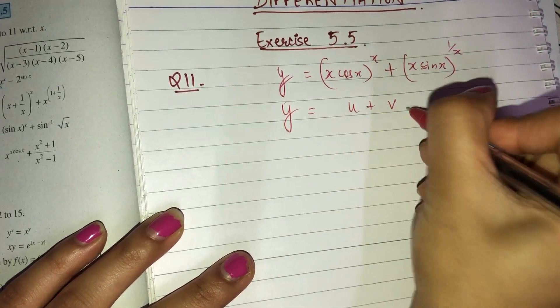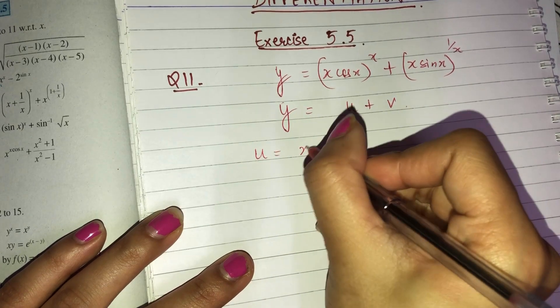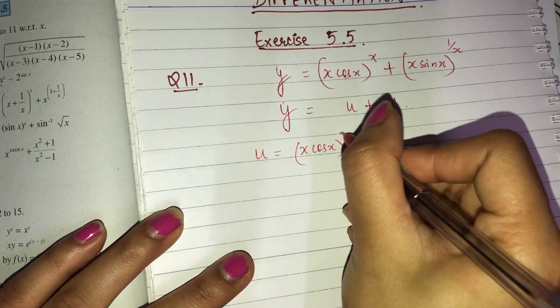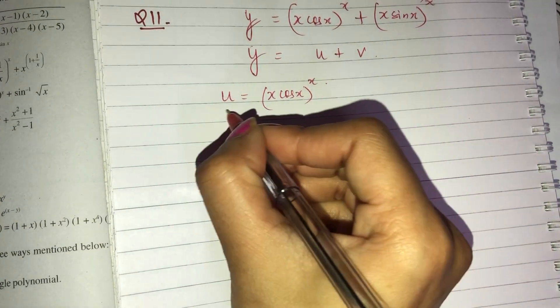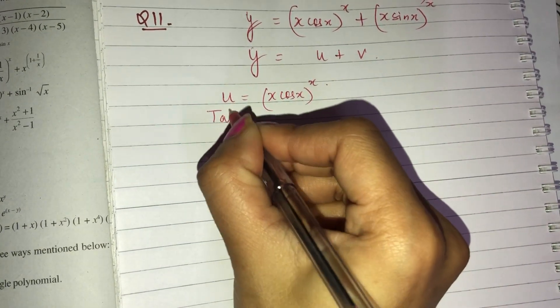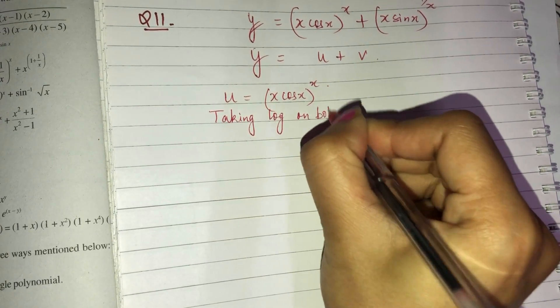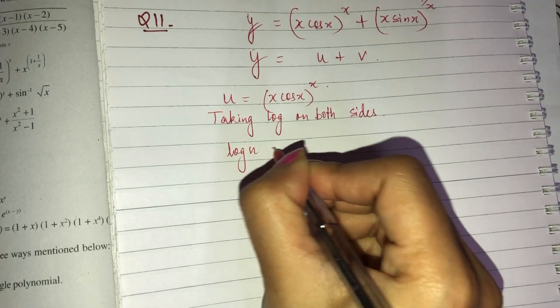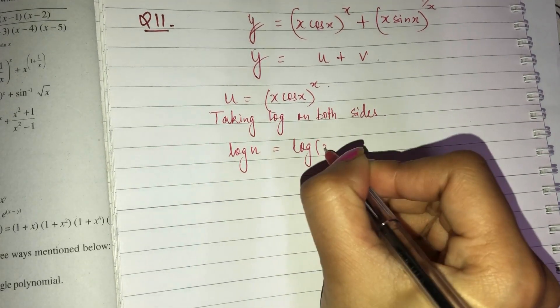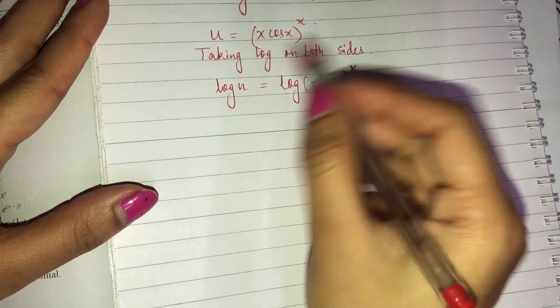So y is equal to u plus v. We can say u is x·cos(x) raised to x. Now taking log on both sides, log u is equal to log of cos(x) raised to x. Then using the identity log(a^b) = b·log(a).